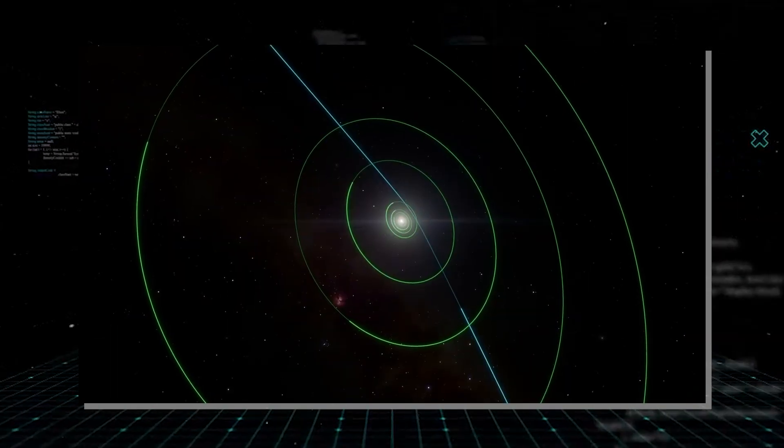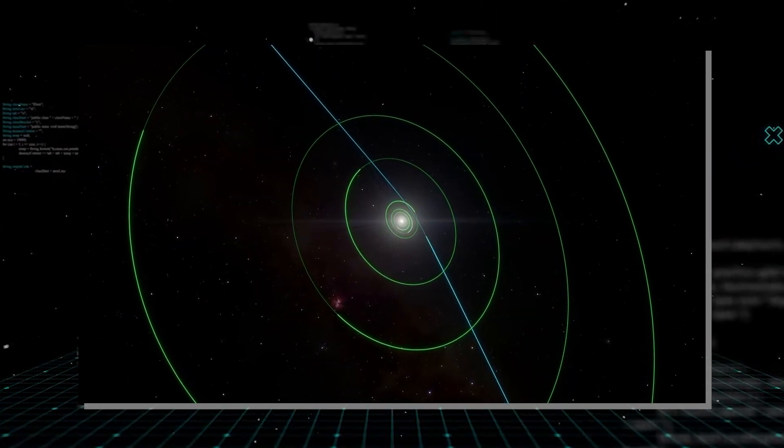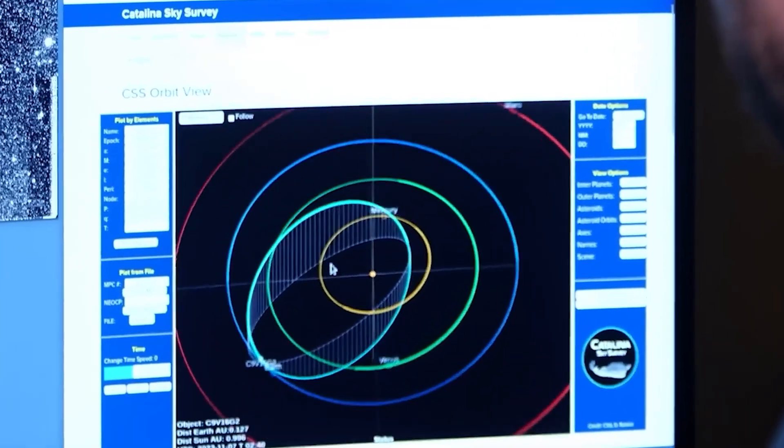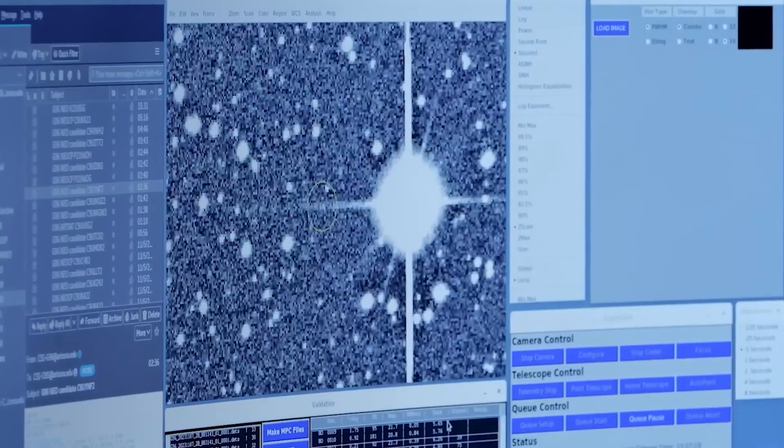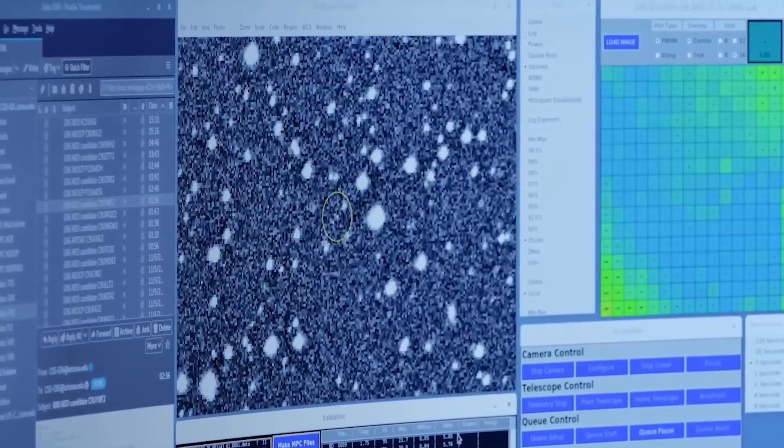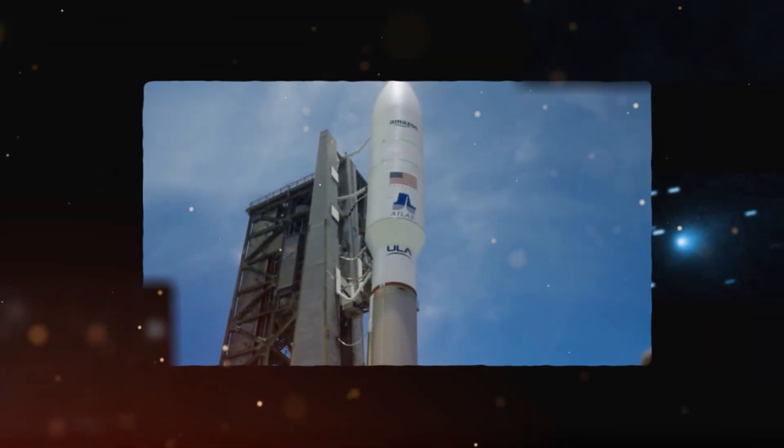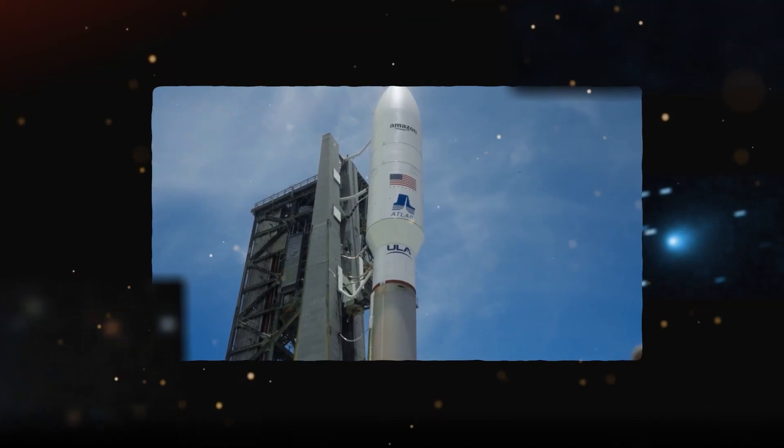This object possessed an orbital eccentricity exceeding 6, far more extreme than any prior interstellar arrival, making its path incredibly hard to track. The immense complexity of managing such a rogue traveler, and the urgent, unstated reasons behind the Space Force's swift, unexplained action.